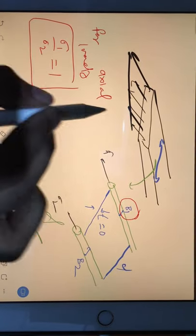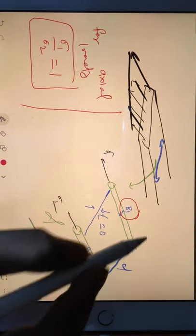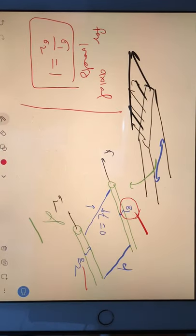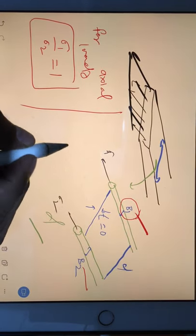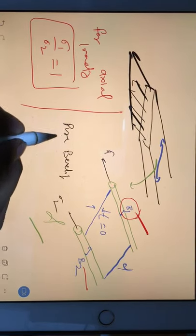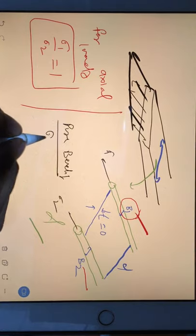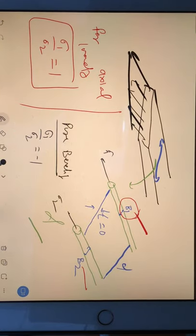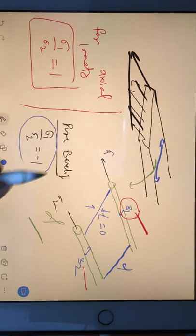And how will you find out b1, b2, I will explain. And for pure bending, for pure bending your sigma1 by sigma2 will be equal to minus 1. Okay, this two data you have to remember.